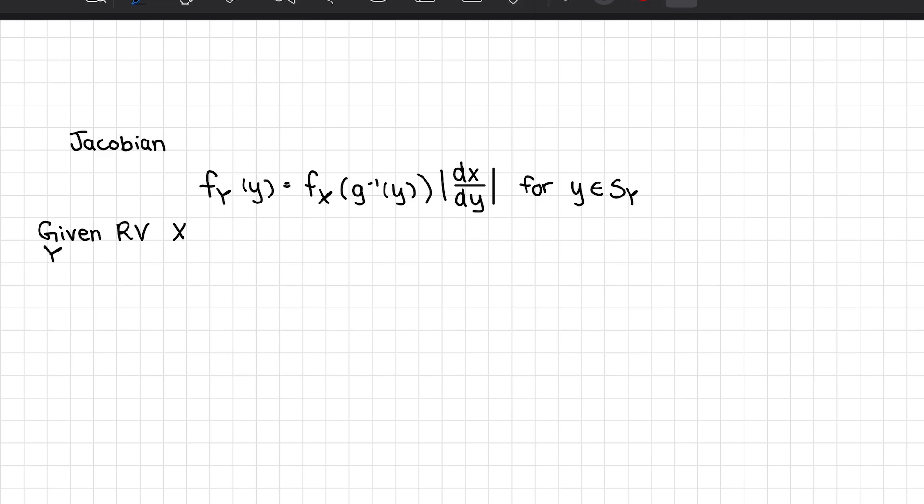The Jacobian technique is where your pdf of Y is equal to the pdf of X, where the inverse of your function Y is inputted into it, and you multiply it by the derivative of this inverse. And this derivative over here is called your Jacobian.